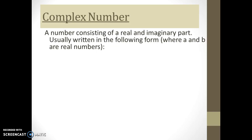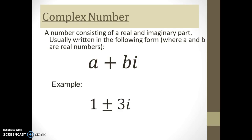A number consisting of a real number and an imaginary number is called a complex number. It's written in the form a plus bi, where a is the real number and bi is the imaginary part. Here is an example: one plus or minus three i — you might get an answer like this if you were solving a quadratic equation that had a negative number under the square root.